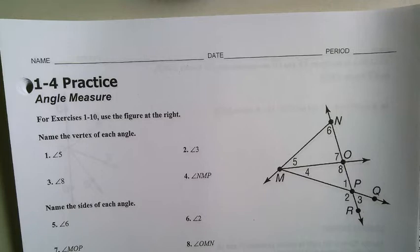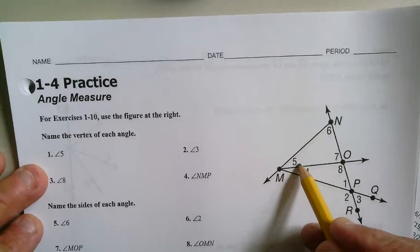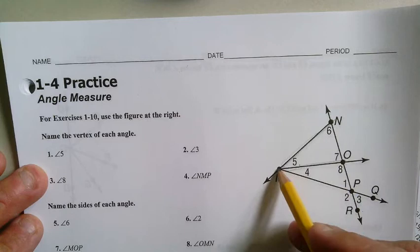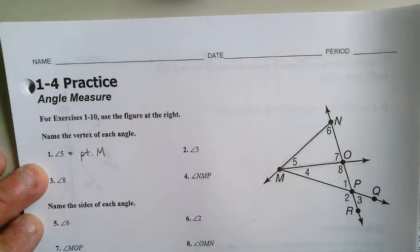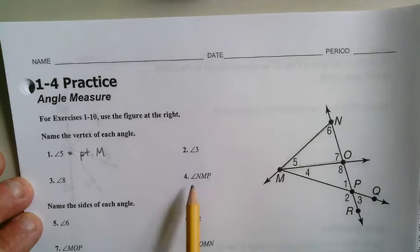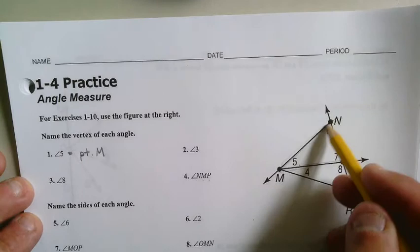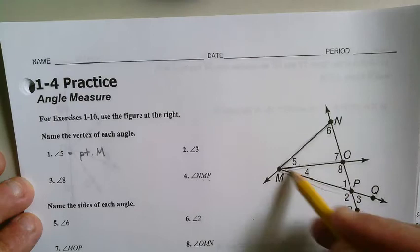When I look at the first section, it says name the vertex of each angle. The angle is angle 5, and if I was to highlight that angle right there, the vertex is going to be this point right here. So I'm going to put down that this is going to be point M. The vertex is point M. And I want you to do the same thing for 3, 8, and angle NMP. If I look at NMP, that's this angle right here. It goes all the way down there.